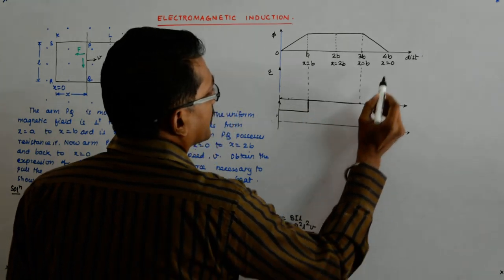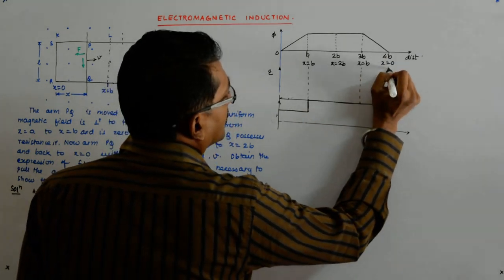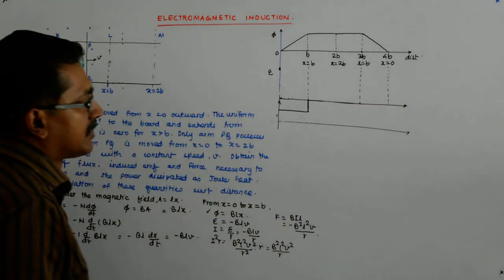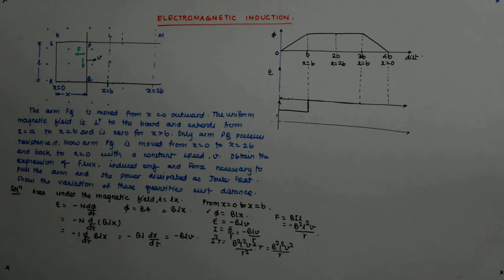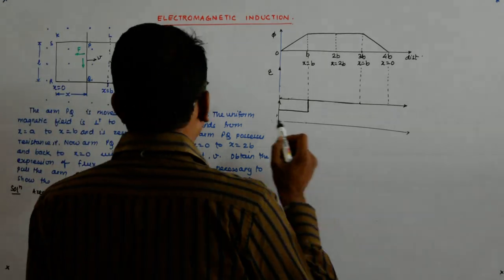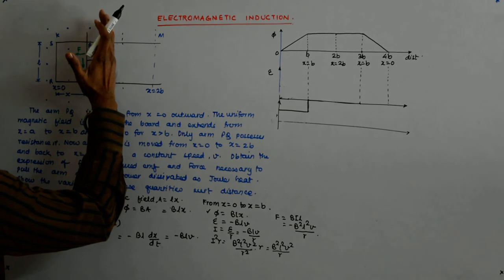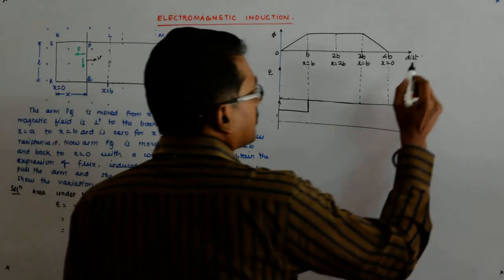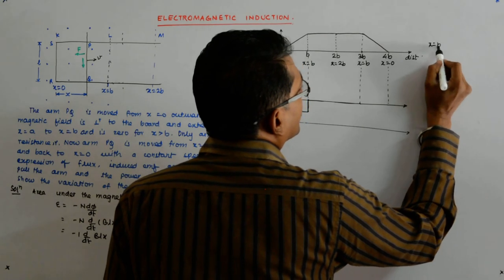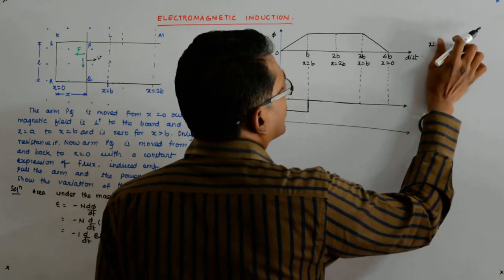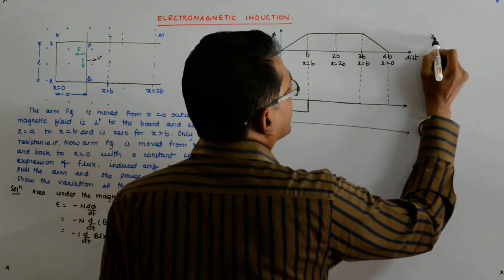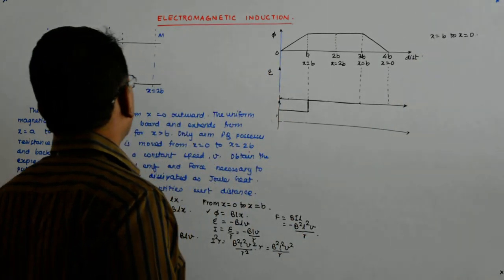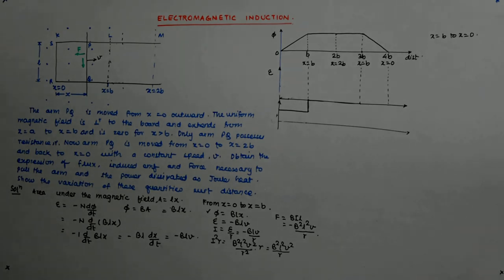The EMF remains 0 till the point where the rod re-enters the field region. Beyond distance 2B (when coming back to x=B), what happens? From x=B back to x=0, it is -dx/dt again, so the EMF expression changes sign as the rod moves back.